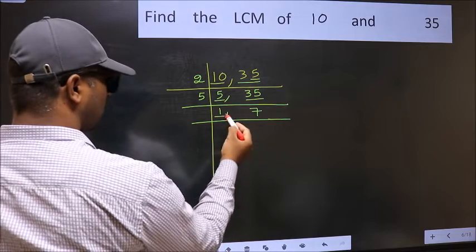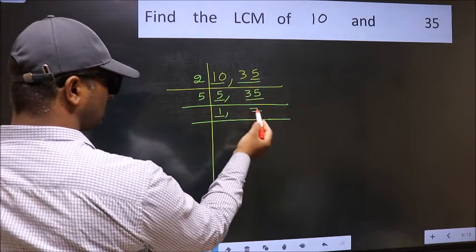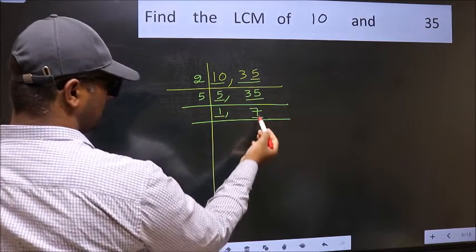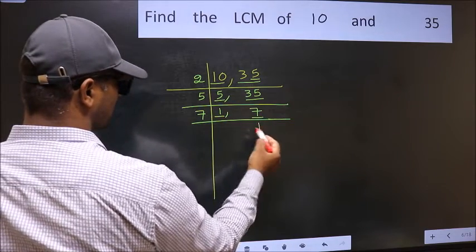Now we got 1 here. So focus on the next number, 7. 7 is a prime number, so 7 divided by 7 is 1.